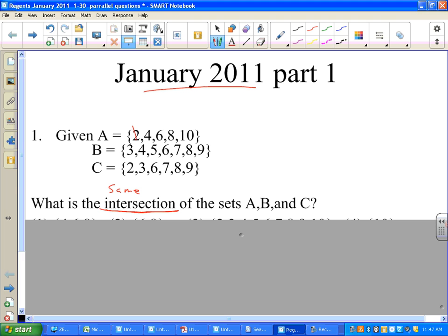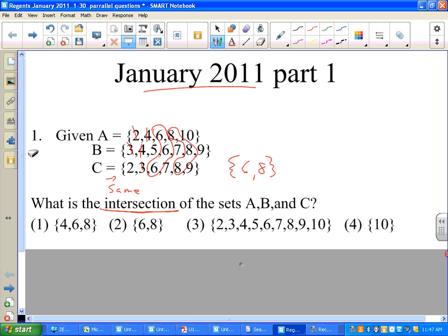Intersection means where they cross or where all the numbers are the same. They do not all have a two, so twos are out. They do not all have a three, so threes are out. Do they all have a four? No. Set C does not have a four, so fours are out. They obviously don't have five because set A starts at number six. Do they all have a six? Yes. They all have a six. Continue checking. Do they all have an eight? Yes. They all have an eight. Do they all have a ten? No. So the answer is in braces, six and eight. We check the multiple choice selections after uncovering them to see which ones are the same. It's choice two. Let's go on to the next part.